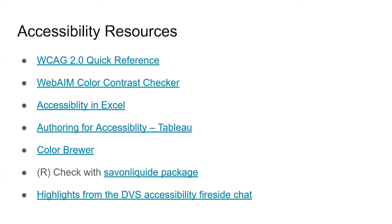These are a few resources to help when designing for accessibility, including some web accessibility requirements, a couple of color contrast checkers, and a few resources for designing for accessibility using different tools.